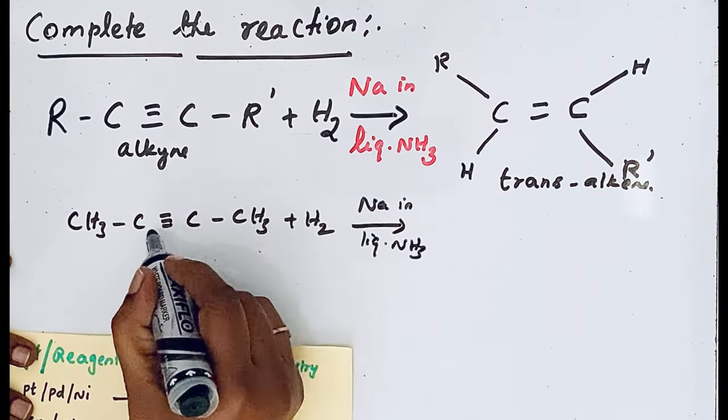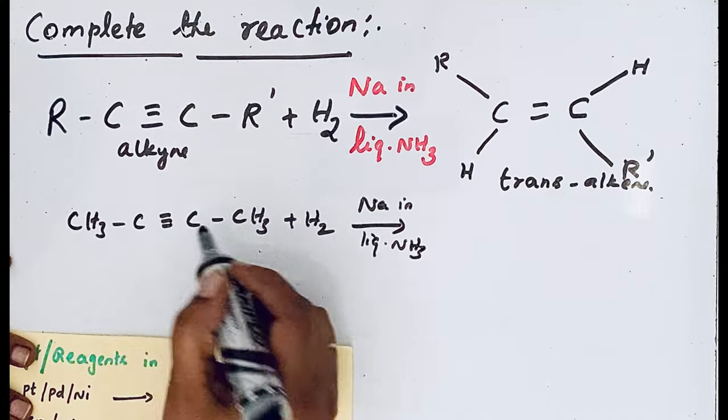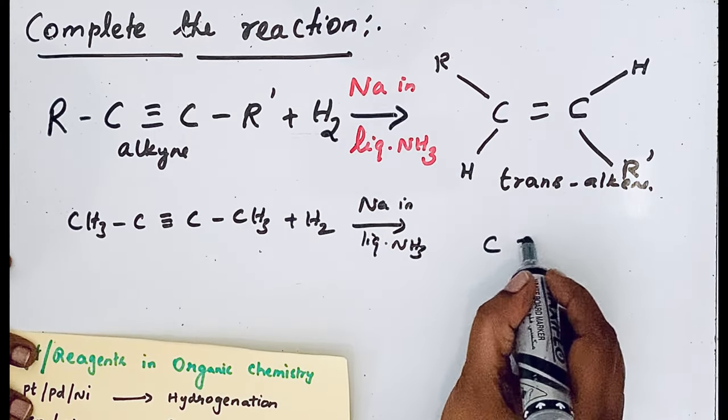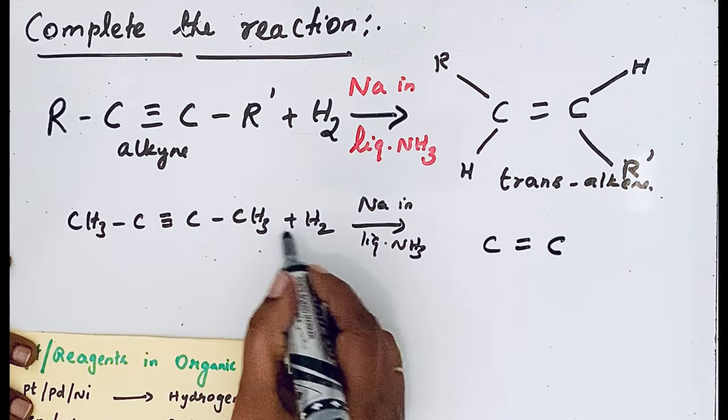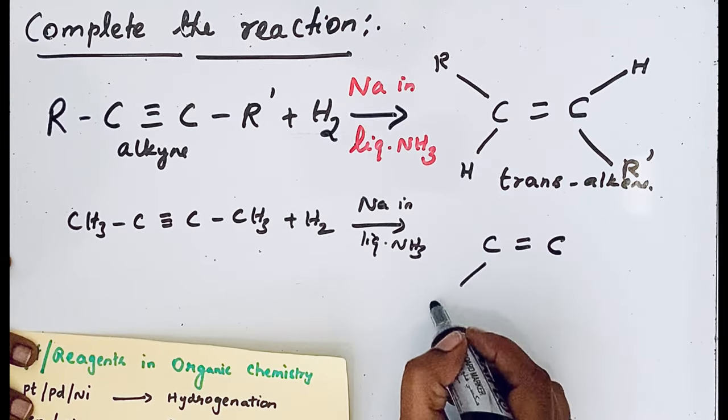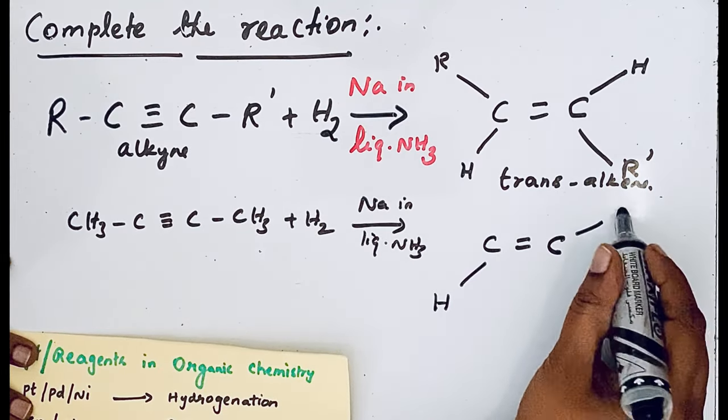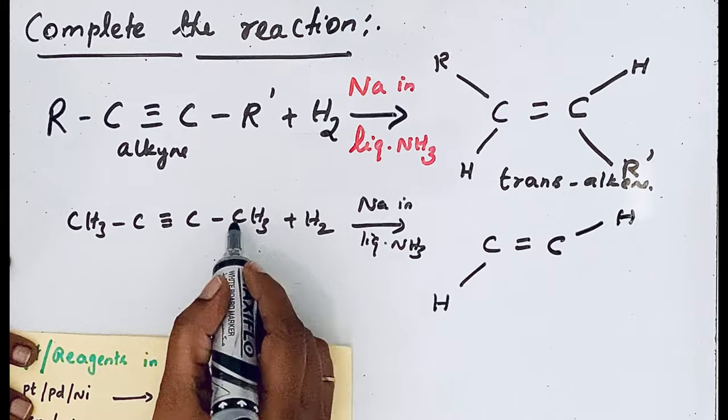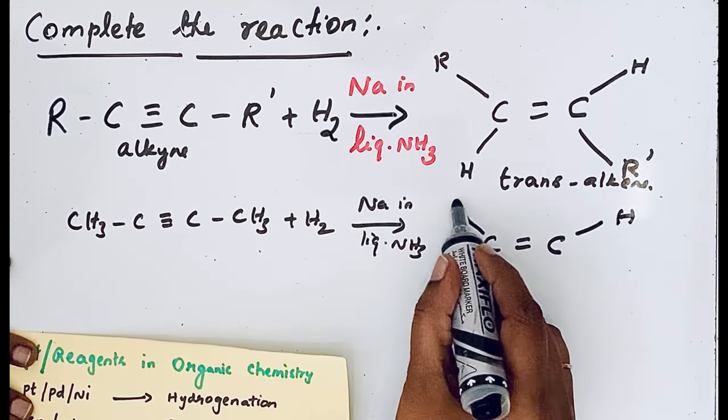When hydrogen is added, the triple bond becomes a double bond, C double bond C. Then hydrogen is added. The hydrogen will go to the opposite side because this is the trans isomer, and the CH3 groups also go on the opposite side.